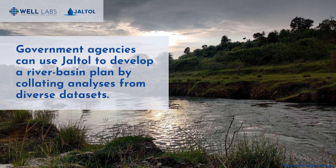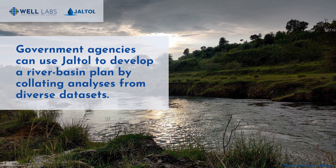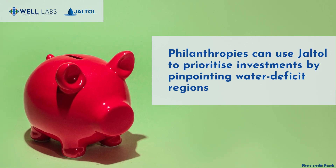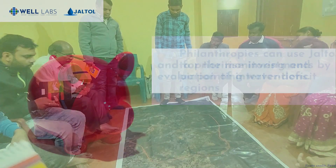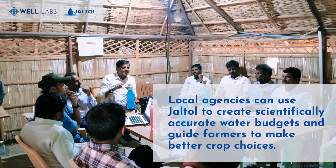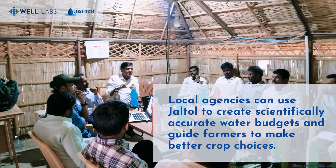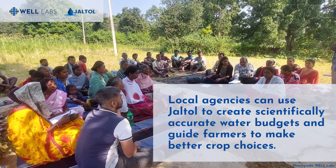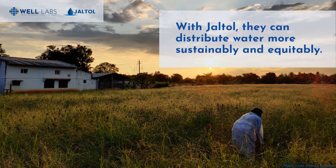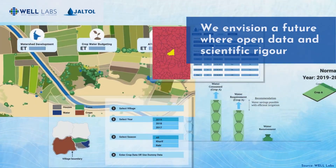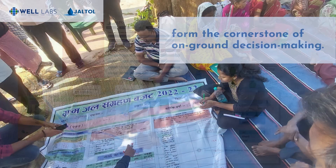It also unleashes the potential of available data sets by transforming complex information into simple insights. Government agencies can use JALTOL to develop a river basin plan by collating analyses from diverse data sets. Philanthropies can use JALTOL to prioritize investments by pinpointing water deficit regions and for monitoring and evaluation of interventions. Local agencies and civil society groups can utilize JALTOL to create scientifically accurate water budgets and guide farmers in making better crop choices, distributing water more sustainably and equitably.